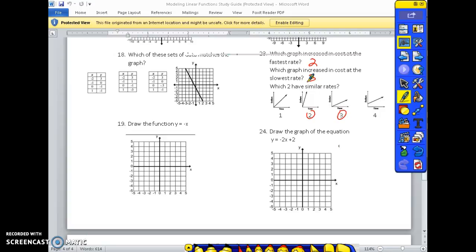And which two have similar rates? These two are pretty close in rates. So that's going to be 3 and 4. It's pretty close to be in the same line. They just start at different places.